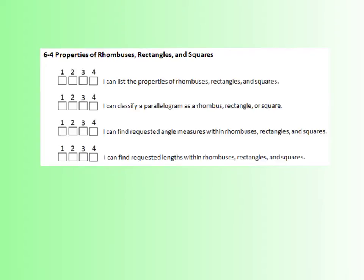Section 6-4 is what you're watching tonight for homework. This is properties of rhombuses, rectangles, and squares, and we have four different objectives. The first one is that we can list the properties of rhombuses, rectangles, and squares. The second is applying those properties to classify a parallelogram as either a rhombus, a rectangle, or a square. Then we'll get into algebra where we identify angle measures or requested lengths within rhombuses, rectangles, and squares.